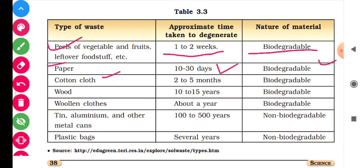Cotton clothes take 2 to 5 months to degrade. Wood takes 10 to 15 years to degrade. Woolen clothes take about a year — they are biodegradable. Tin, aluminium and other metal cans take 100 to 500 years — these are non-biodegradable.